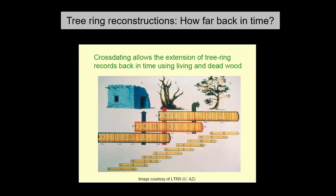There is a technique called cross-dating. A sample is taken from a living tree, along with samples from a dead tree and from old archaeological sites where tree trunks were used in construction. The tree ring patterns are compared — periods where rings are very narrow can be matched across samples to create a continuous record. By this pattern matching, we can extend the tree ring record to a few thousand years, even if individual trees are only 200–300 years old.